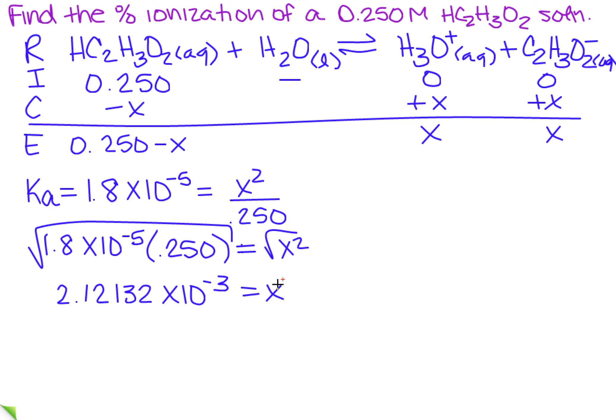So when I want to compare it, I need to take that number, and I need to divide it by what? I need to divide it by the initial concentration, which in this case is 0.250, and then I'm going to multiply by 100, because remember we need it to be a percentage. And when I did that, I got 0.84%.